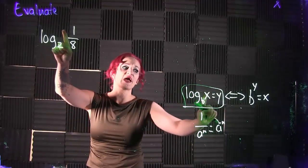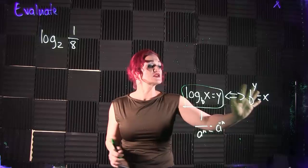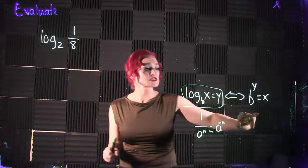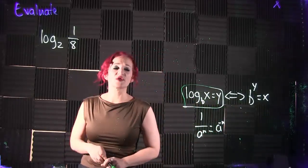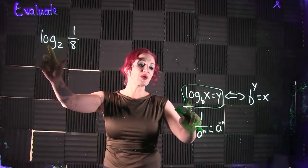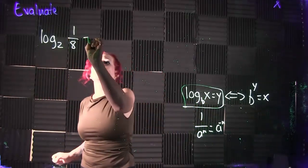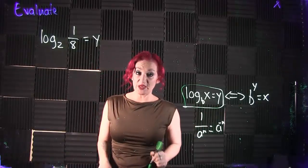So log base b of x is equal to y. This is our conversion between logarithmic and exponential, exponential to logarithmic. The only thing we're missing here is it being set equal to y, since we have our log base b of our x.